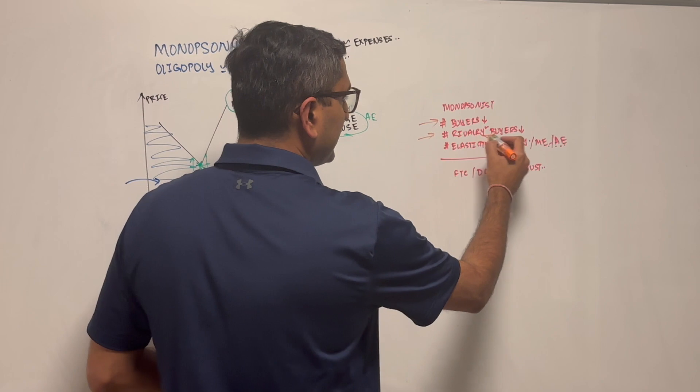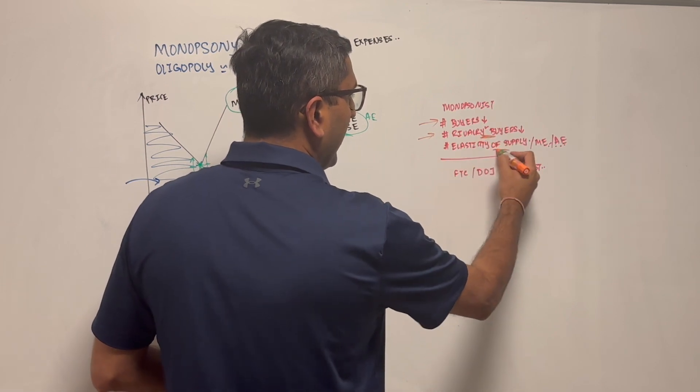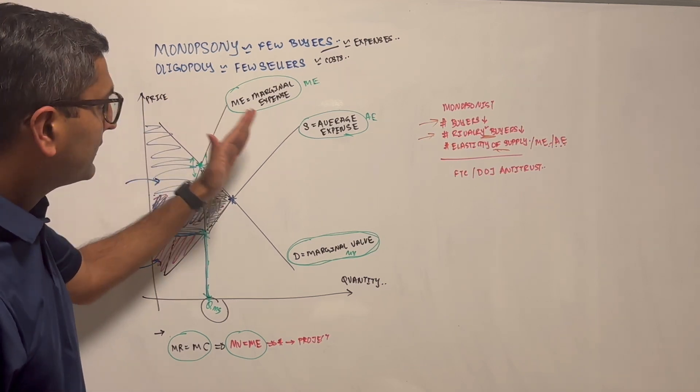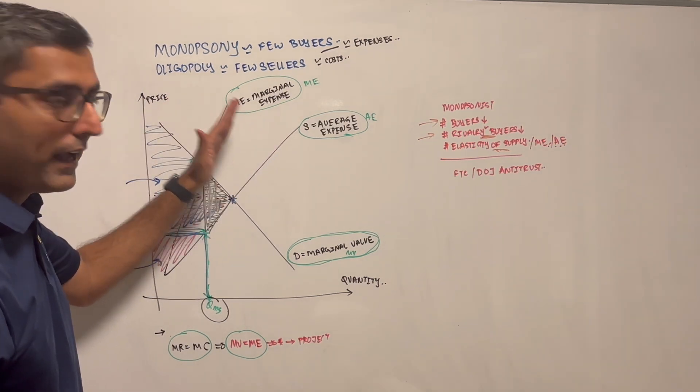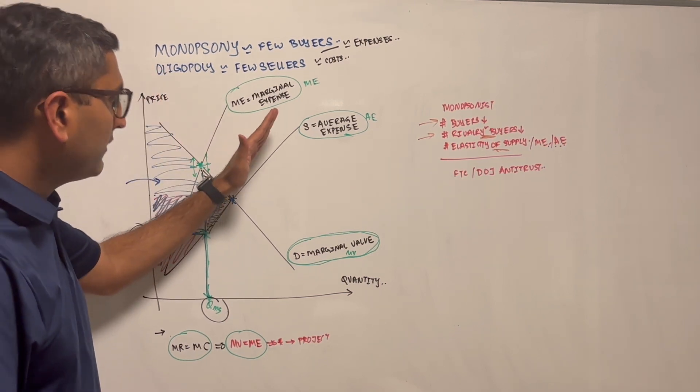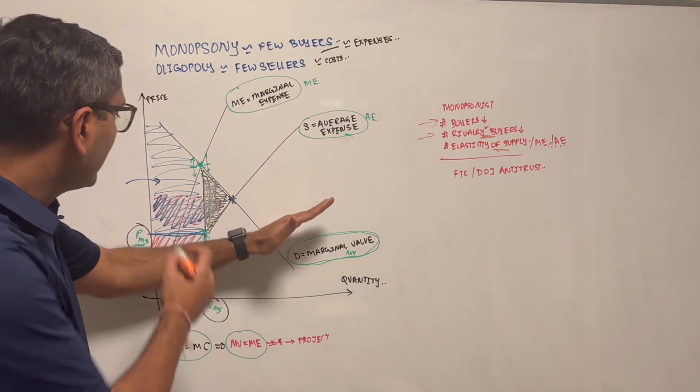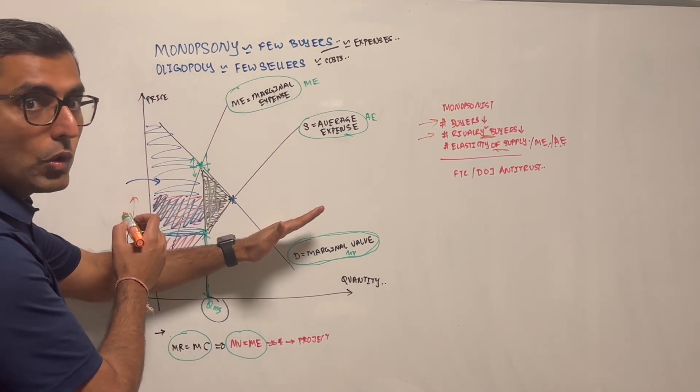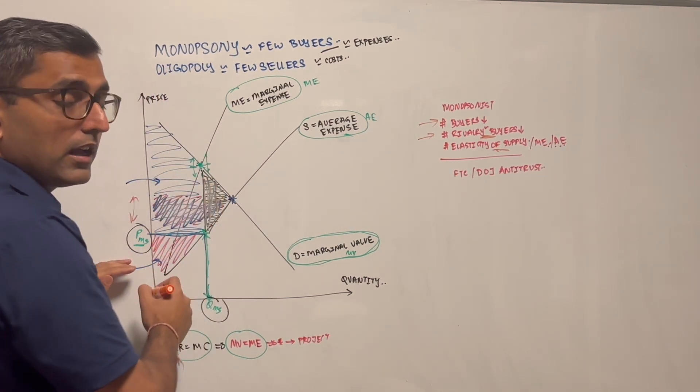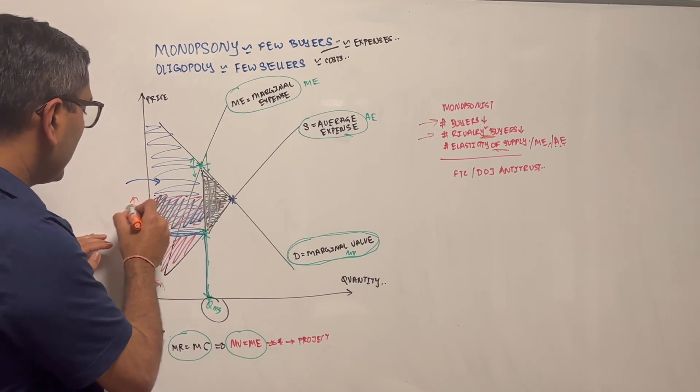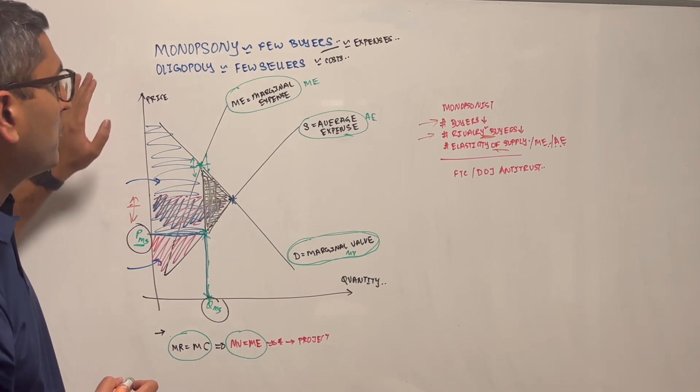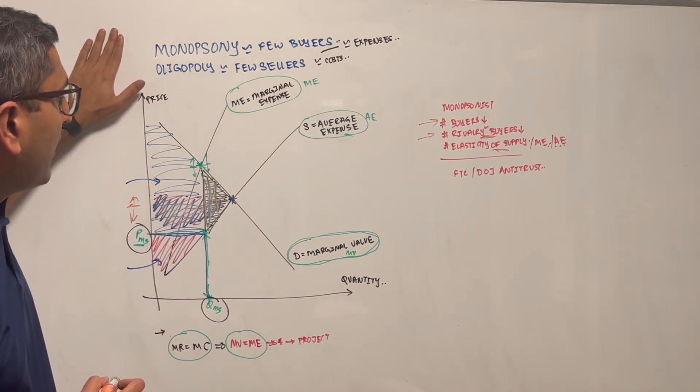And again, as you can imagine, this curve - the elasticity of marginal expense, average expense - has a huge impact. The higher the elasticity where the slope is much lower, you can start to see that the markup that you can get is going to be much lower. But if it's highly inelastic and has a much steeper slope, you can now significantly buy at a much lower discount. So that's the easy takeaway from monopsonist.